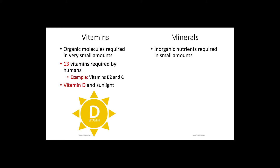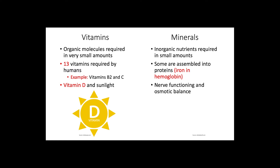In terms of minerals, we can find them assembled into proteins, like iron in the transport protein hemoglobin. Also, minerals like sodium and potassium serve in the functioning of nerves and in maintaining osmotic balance. Some examples of minerals include sodium, potassium, calcium, magnesium, copper, iron, chlorine, and iodine.